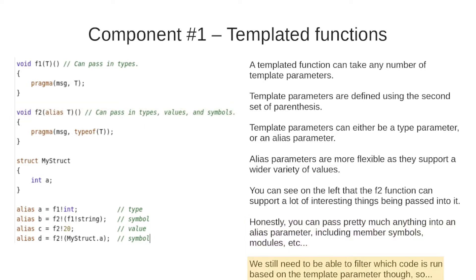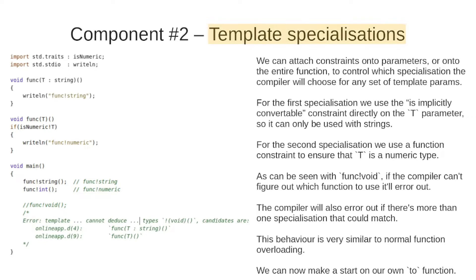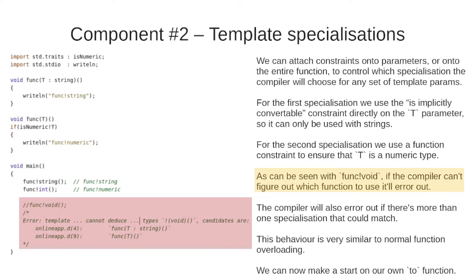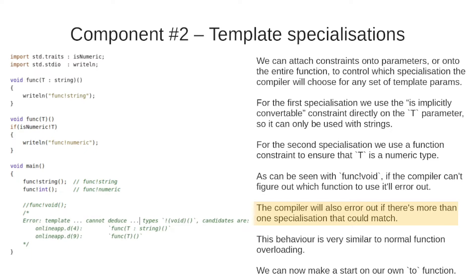We still need to be able to filter which code is run based on the template parameter, so that brings us to template specializations. You can attach constraints onto parameters or onto the entire function to control which specialization the compiler will choose for any set of template parameters. For the first specialization we use the is-implicitly-convertible constraint directly on the T parameter so it can only be used with strings. For the second we use a function constraint to ensure T is a numeric type using the isNumeric trait. The compiler will error out if it can't figure out which function to use, or if more than one specialization matches — very similar to normal function overloading.